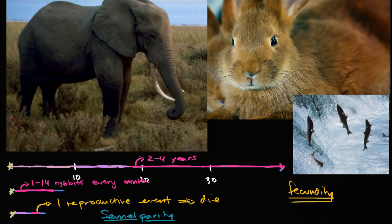Semelparity comes from the Latin for once. Parity comes from the Latin for to beget. So to beget once. You're reproducing once, and then in the case of salmon, you are dying. And if that's semelparity, what would we call an elephant or rabbits? They can have multiple reproductive events. That is called iteroparity. Itero means repeat. So iteroparity, beget repeatedly. That's what animals like elephants and rabbits are actually doing.